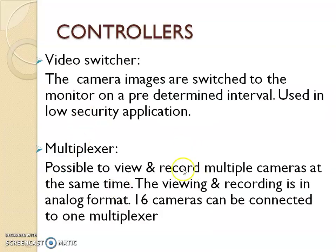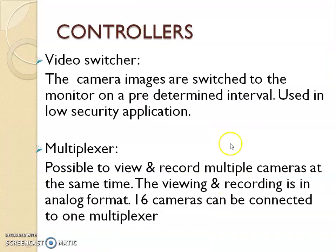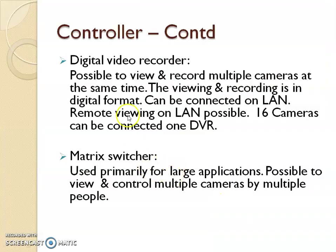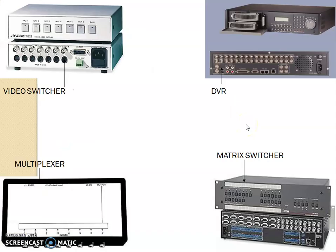Next is the multiplexer — with a multiplexer you can see many images on one screen simultaneously. For example, a 4x4 arrangement showing 16 video feeds on one screen requires a multiplexer. The next component is a digital video recorder, DVR, used to record the information. Next is the matrix switcher. A digital video manager is used to control multiple cameras by multiple people at the same time. Here are the images: this is the video switcher, this is the multiplexer, this is the DVR, and these are matrix switchers.